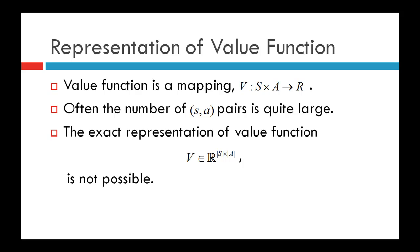The value function is a mapping from a state-action pair to a real number — the value for (s, a) is the future discounted reward an agent can get when it takes action a in state s and thereafter follows policy π. Often the number of state-action pairs is very large; for example, in a continuous domain the number of states is infinite. So the exact representation of the value function in a space R^(|S| × |A|) would be infinite, making exact representation obviously impossible. Therefore we need approximation methods.